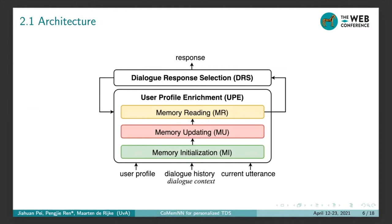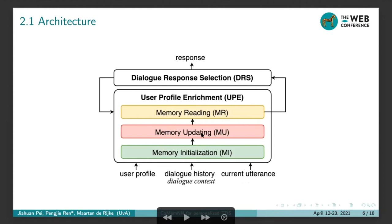Let's go deeper into the model details. Here is the architecture, which consists of two cooperative modules: the User Profile Enrichment (UPE) module and the Dialogue Response Selection (DRS) module. For each turn, given a dialogue context consisting of a user profile, dialogue history, and current utterances, the UPE module works with memory initialization, memory updating, and memory reading to get an enriched user profile. This enriched user profile is then used to improve the DRS module and select a better response.